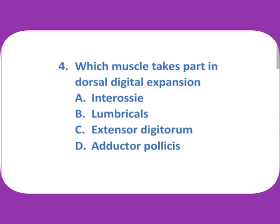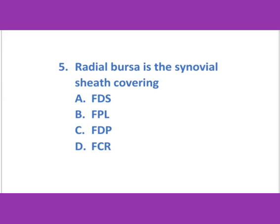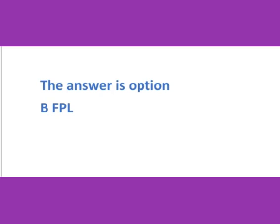The answer is option D: first lumbrical. Which muscle takes part in dorsal digital expansion? — (a) interossei, (b) tarco C lumbricals, (c) extensor digitorum, (d) adductor pollicis. The answer is option D: adductor pollicis. Radial bursa is the synovial sheath covering — (a) FDS, (b) FPL, (c) FDP, (d) FCR. The answer is option B: FPL.